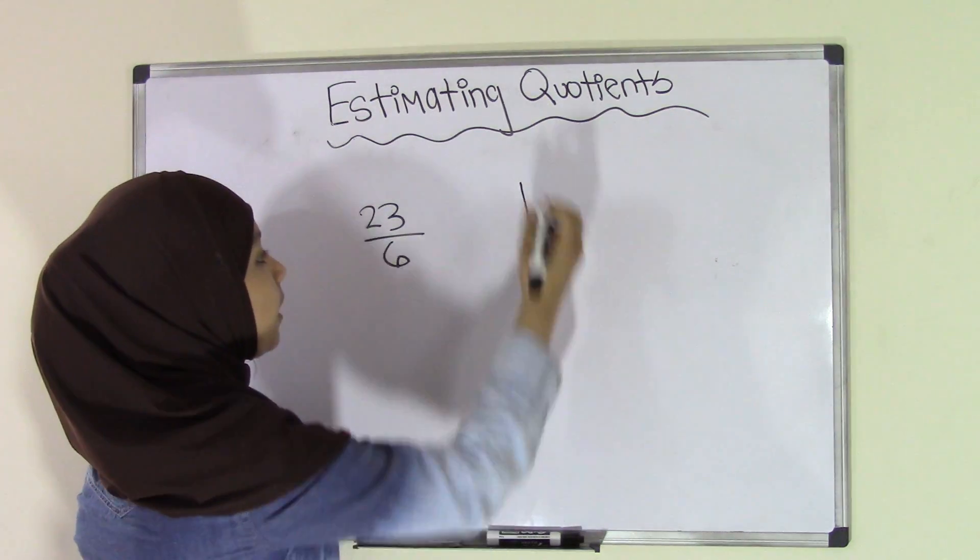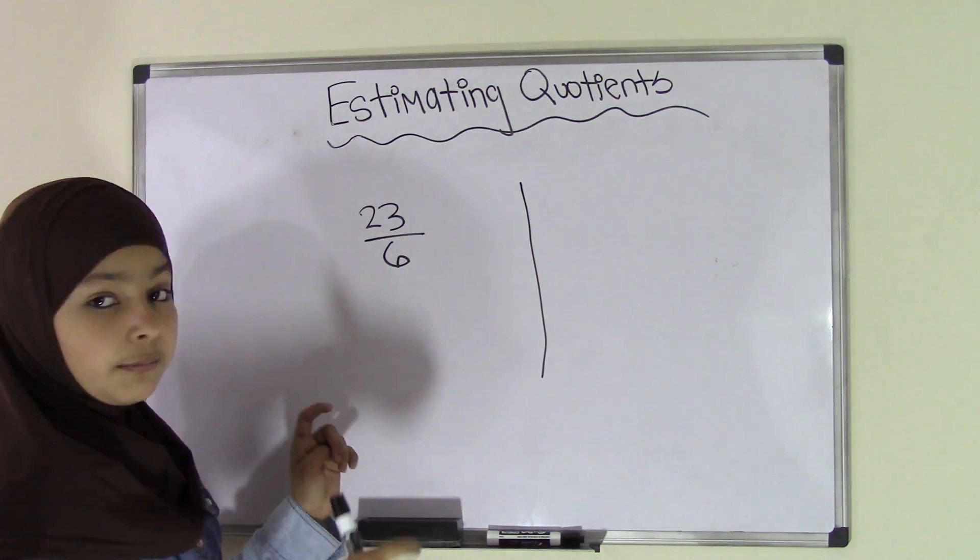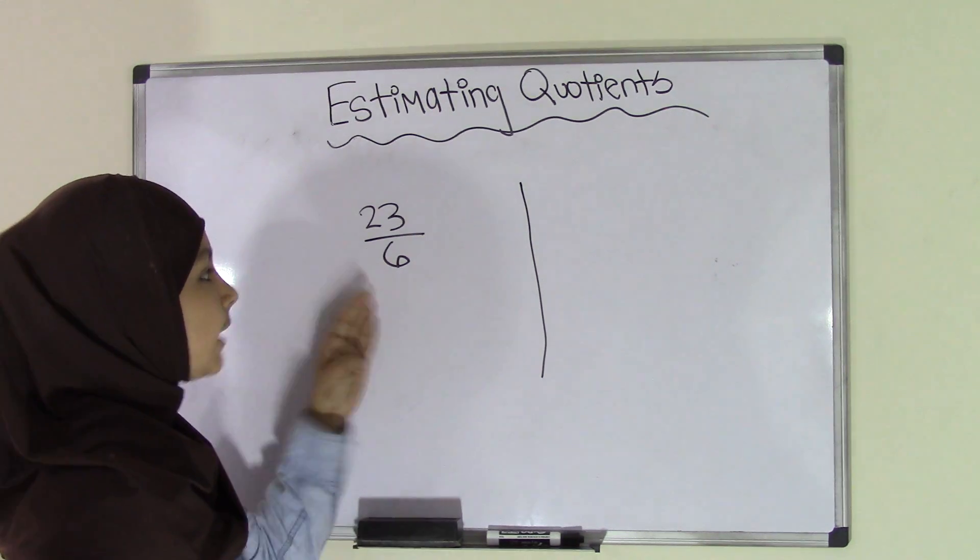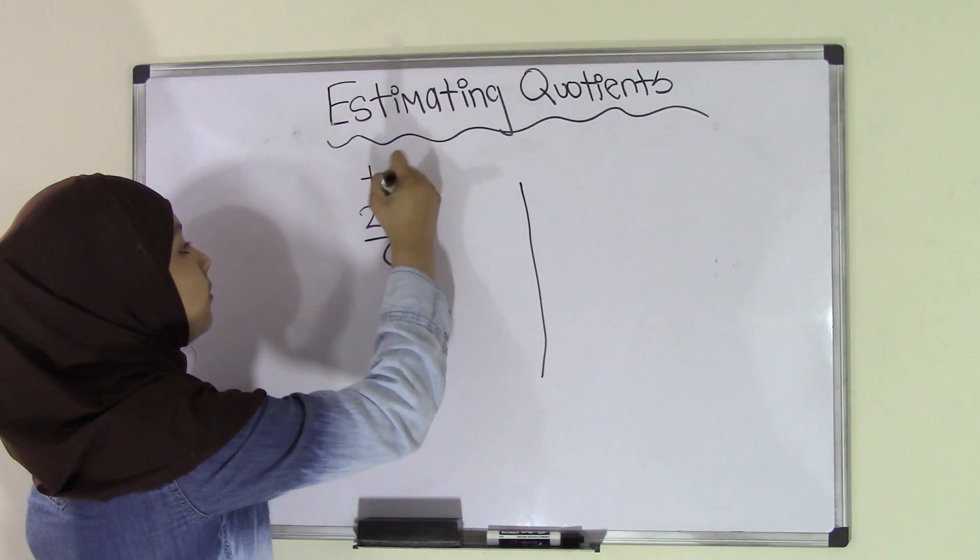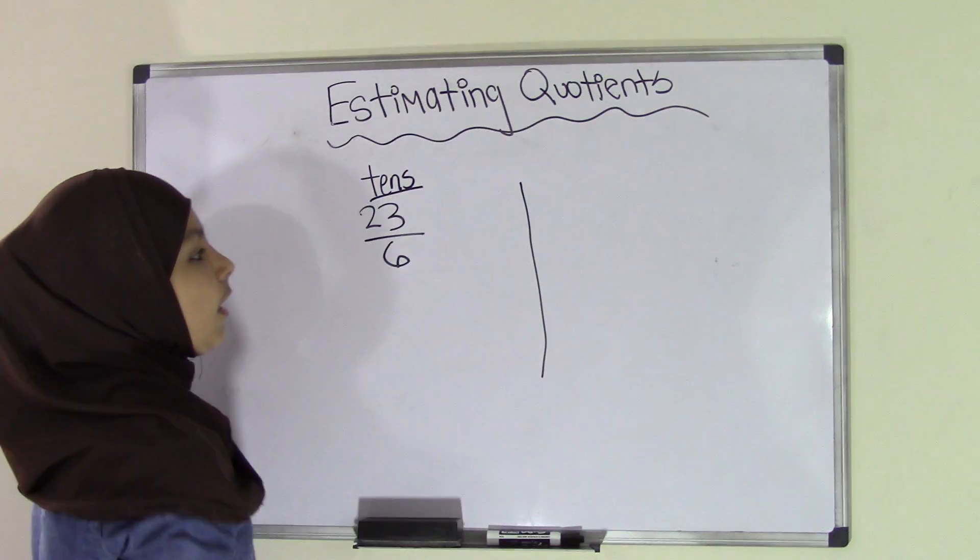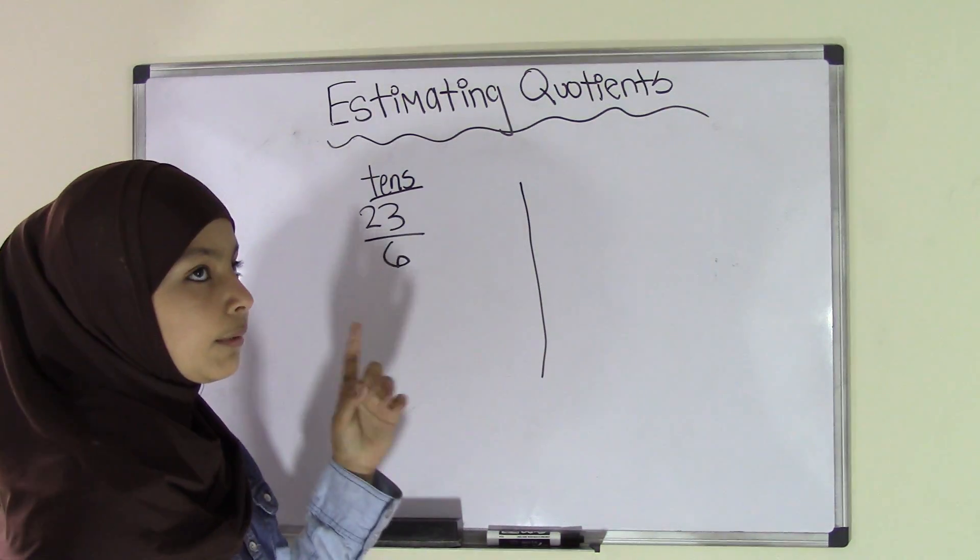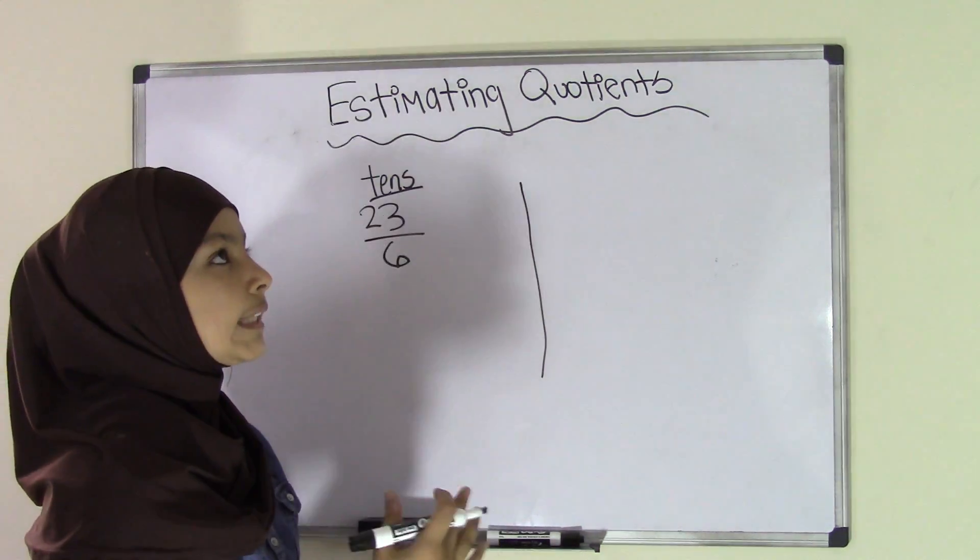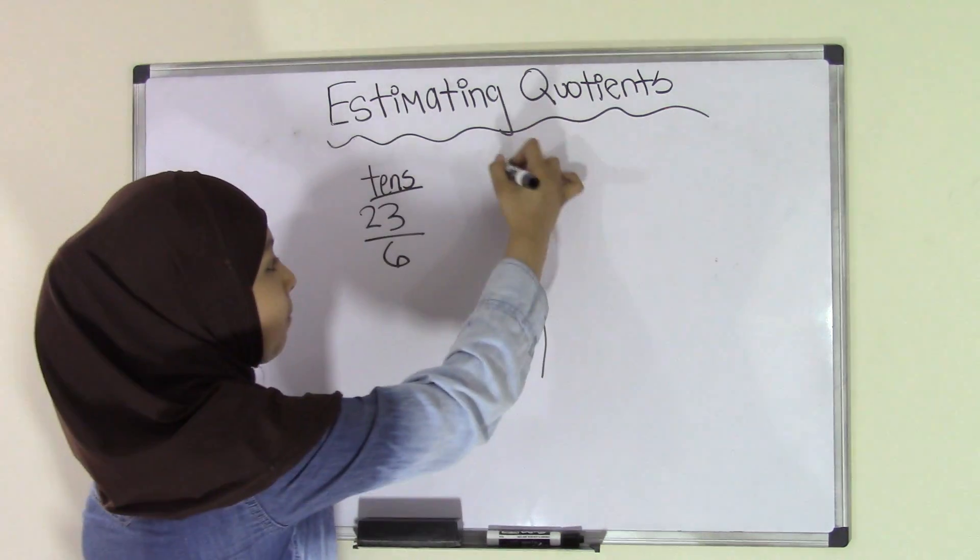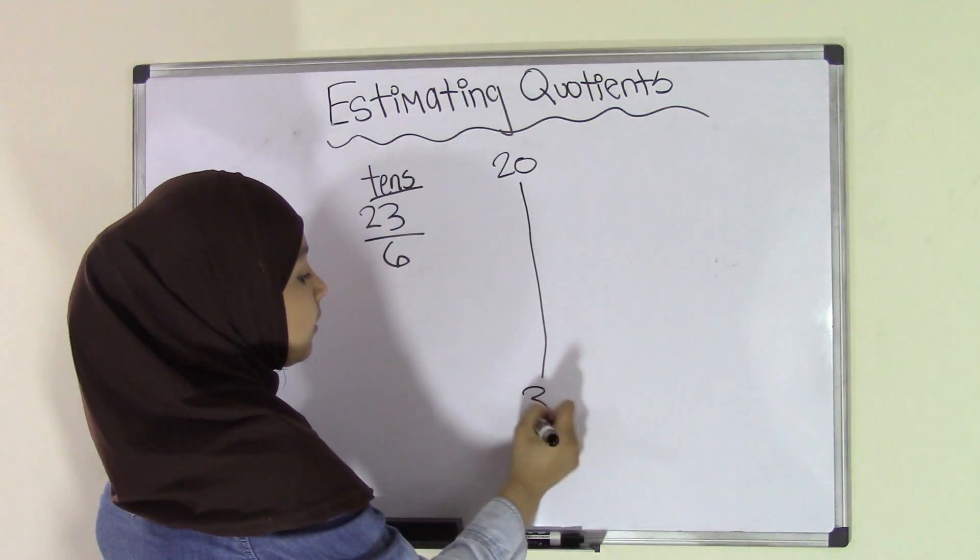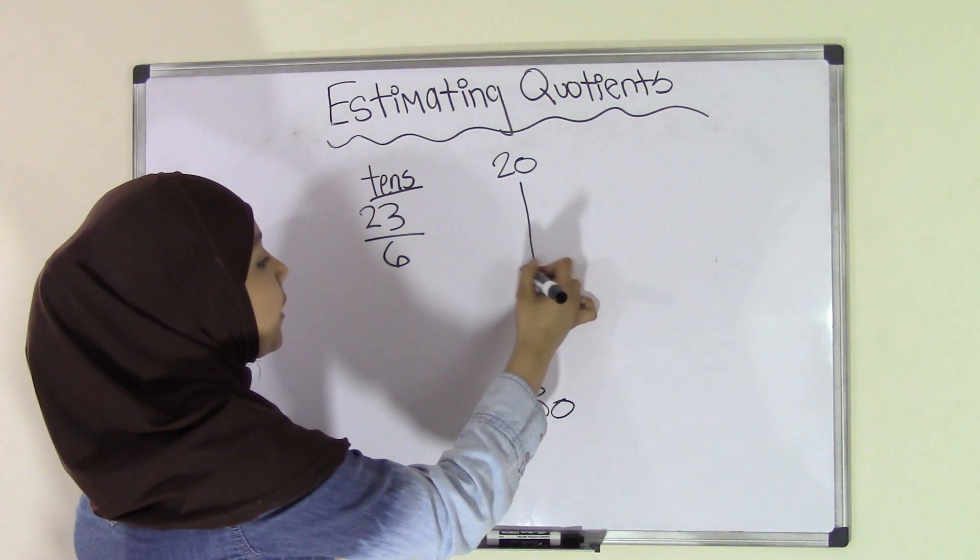So first, let's take a look at 23. Keep in mind that we're going to be rounding to the nearest tenth place here. If you look at 23, we know that two nearest tenths would be 20 and 30. Now, we know that 25 would come in the middle.